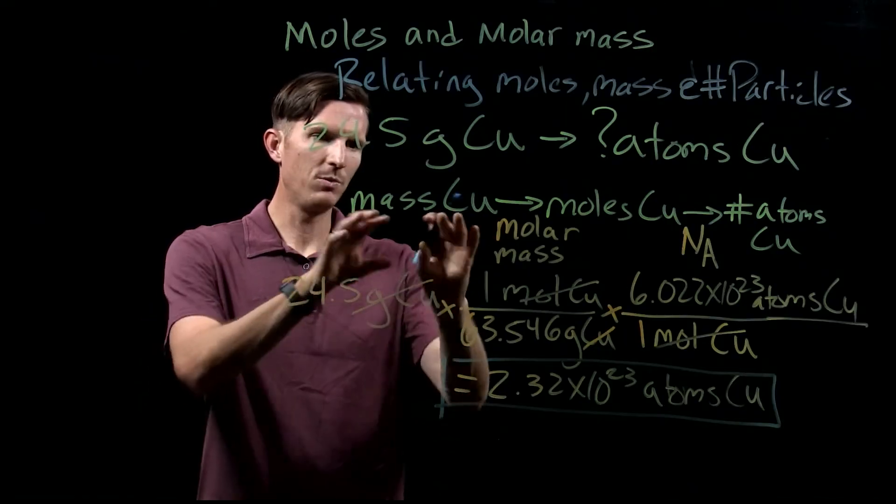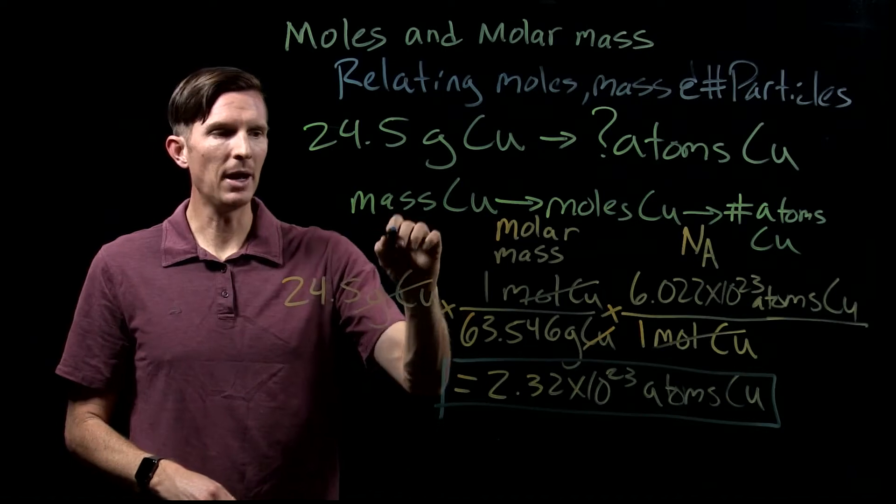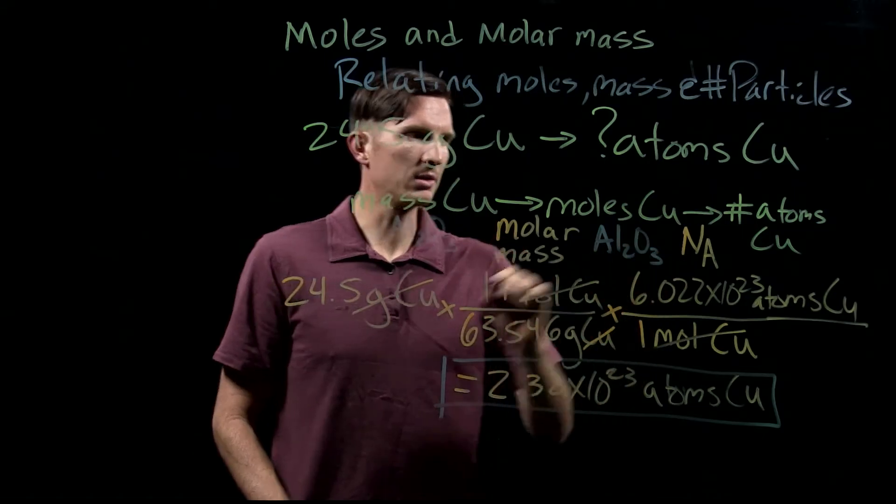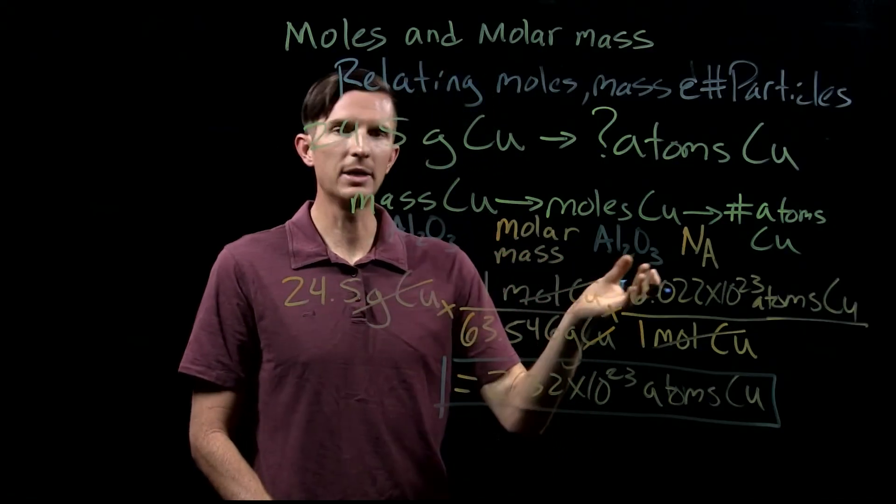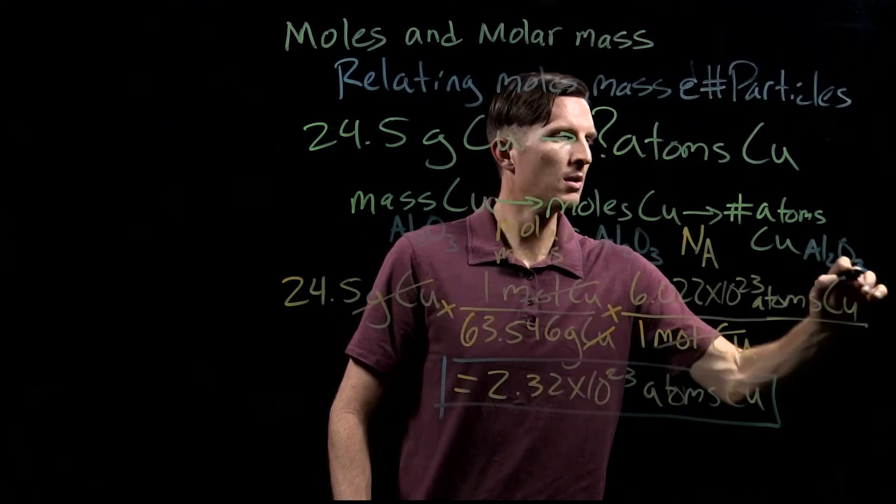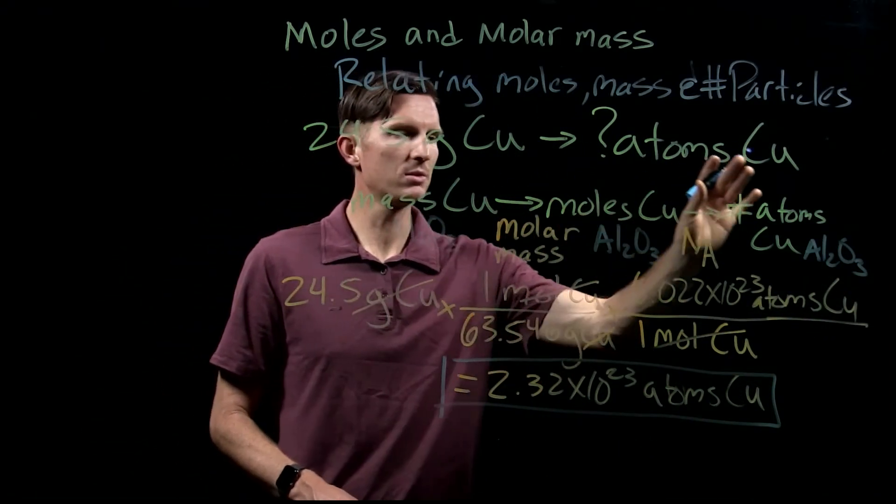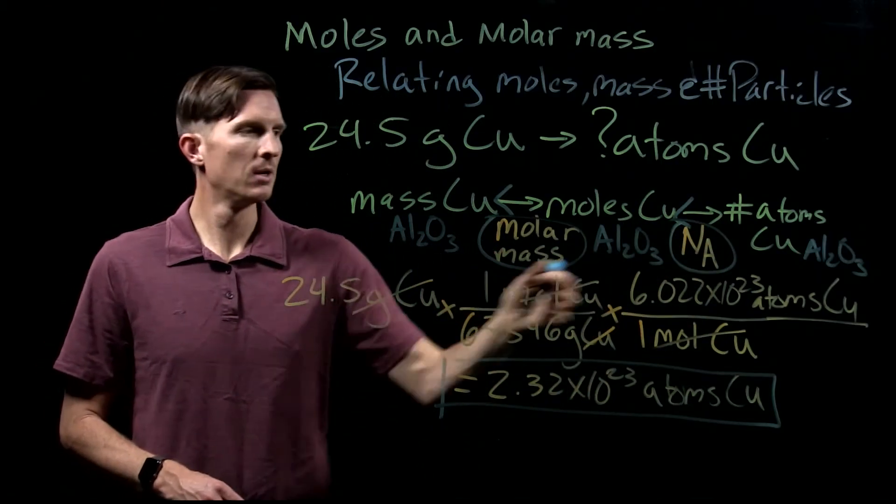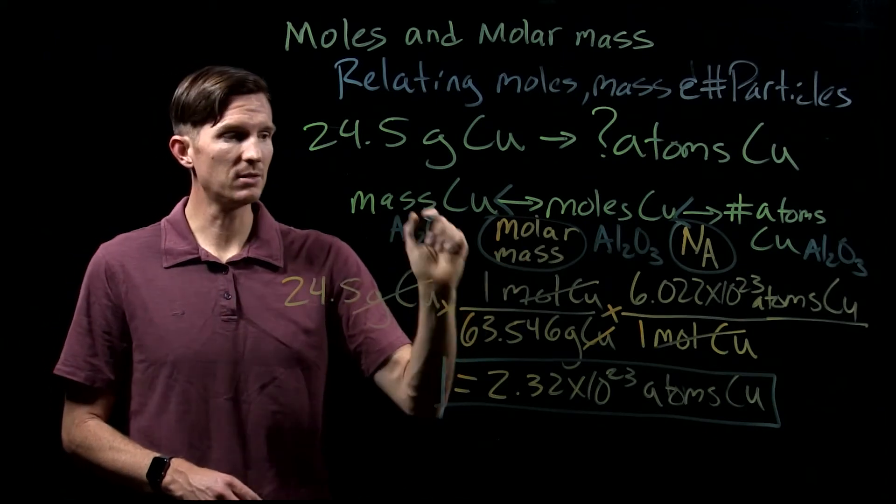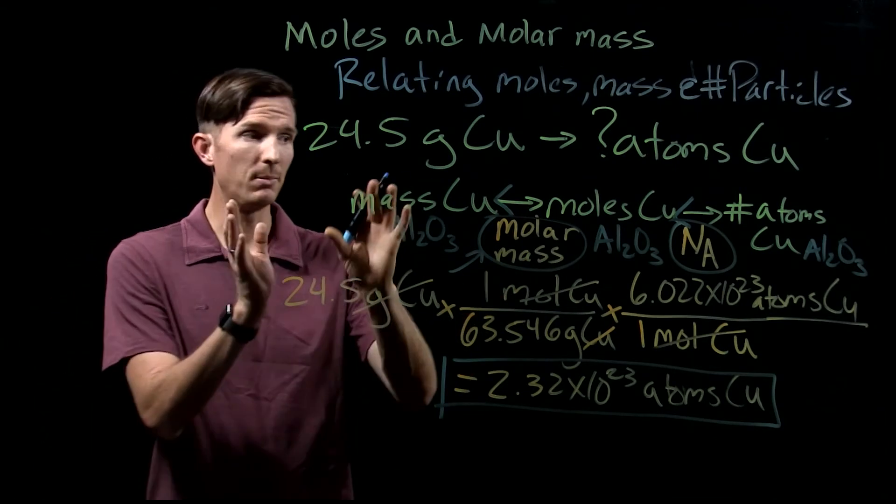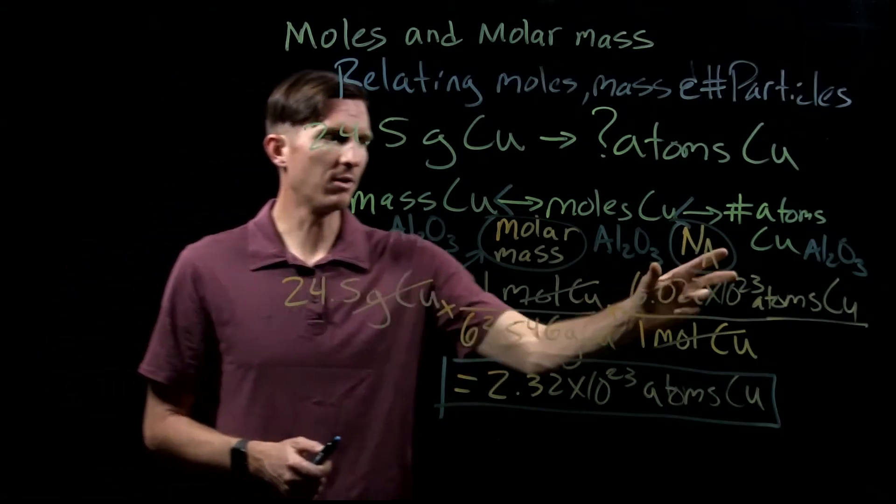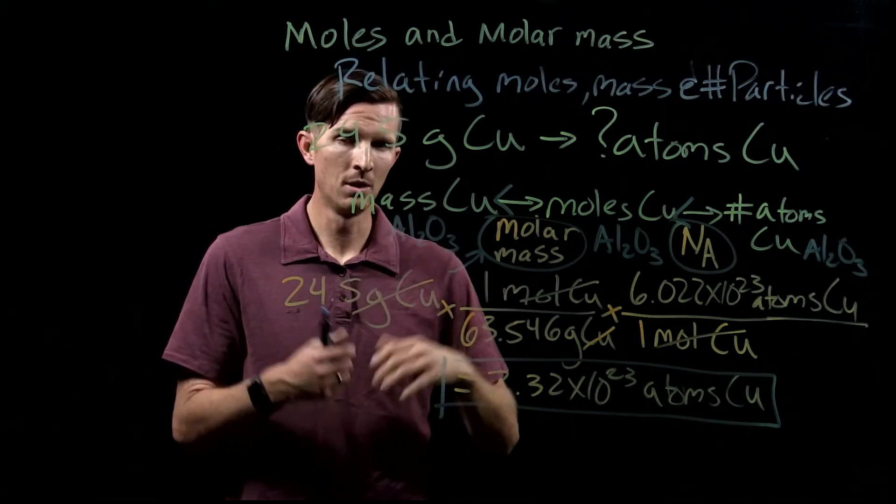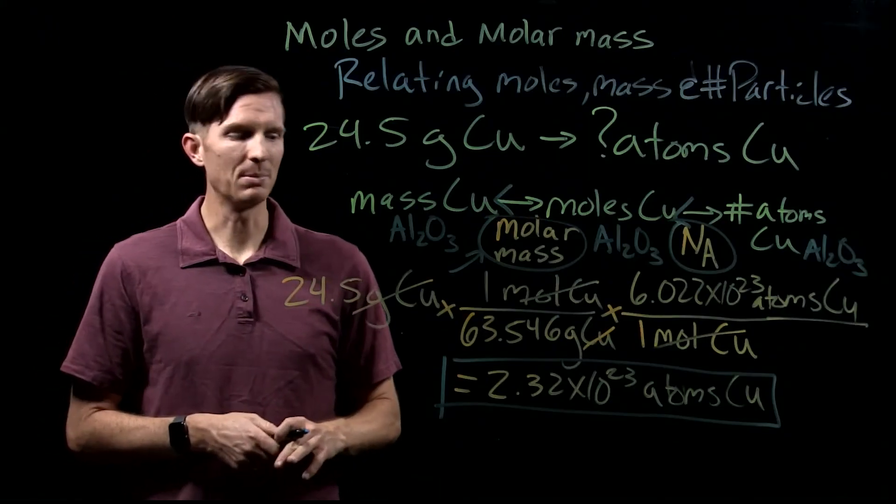Now, more broadly, we can say this doesn't have to be for copper. This could be mass of any substance. This could be mass of aluminum oxide, and then that would be the moles of aluminum oxide. And then it would be not the number of atoms of copper, but we would look at the number of formula units of aluminum oxide. So this same process of mass to moles to number of atoms and back and forth can be applied using these two different conversion factors. Avogadro's number between number of atoms and moles, and the molar mass, which is specific to that substance. So if I'm going from aluminum oxide to aluminum oxide, I need the molar mass of aluminum oxide. Avogadro's number is true for all substances. One mole of any substance is equivalent to 6.022 times 10 to the 23rd particles of that substance, whether it be ions or molecules or formula units, depending on what we're talking about.